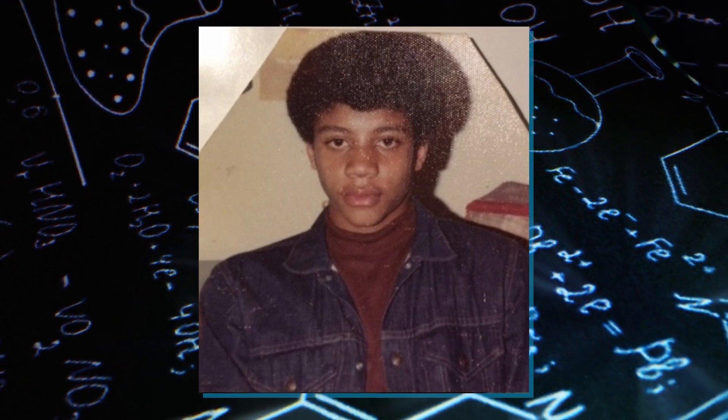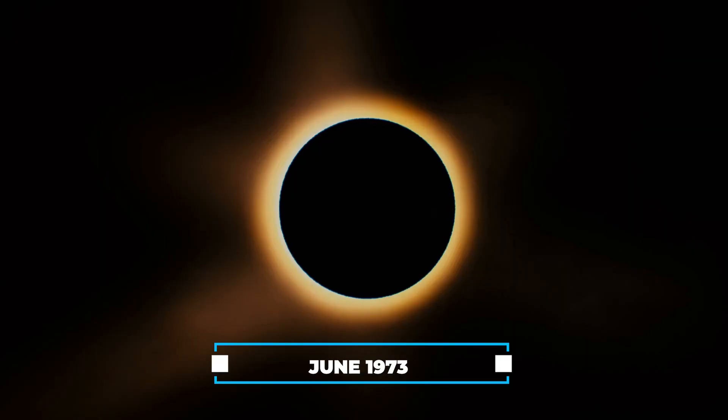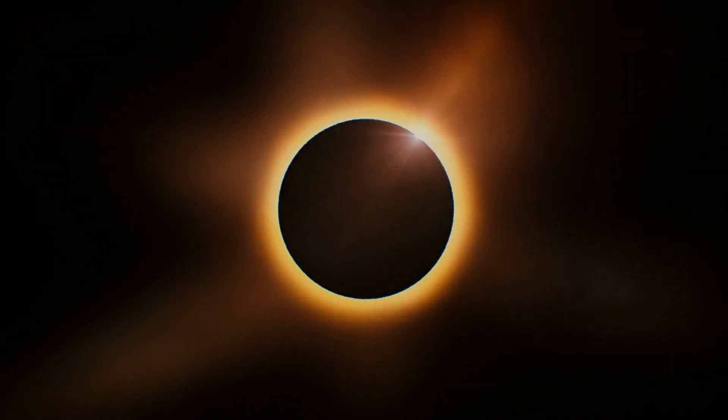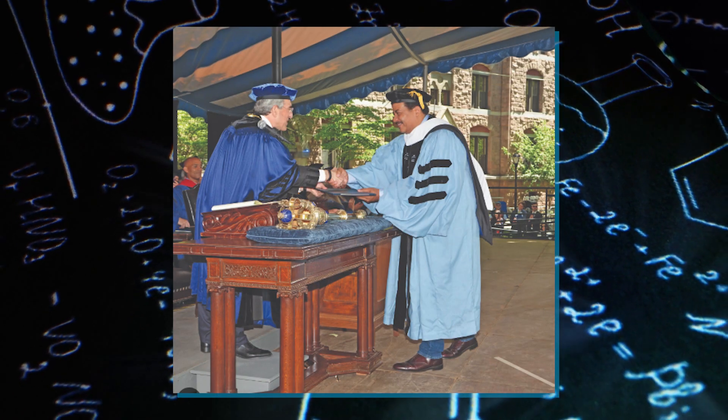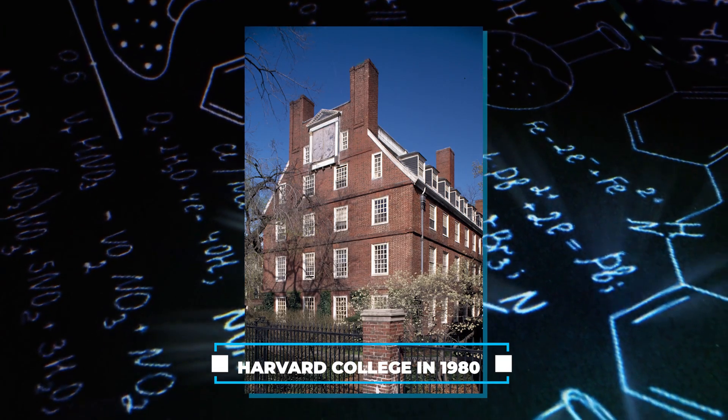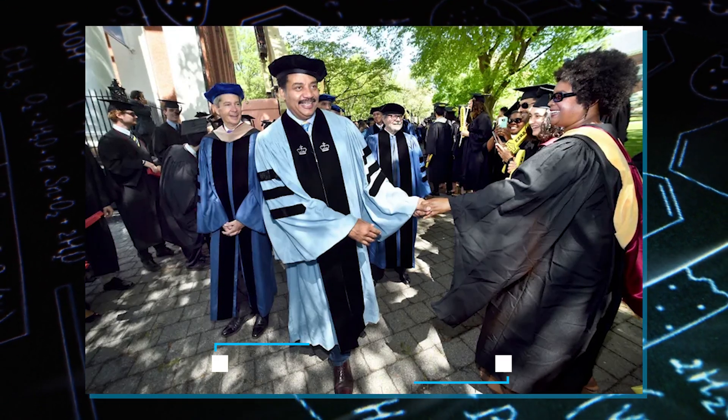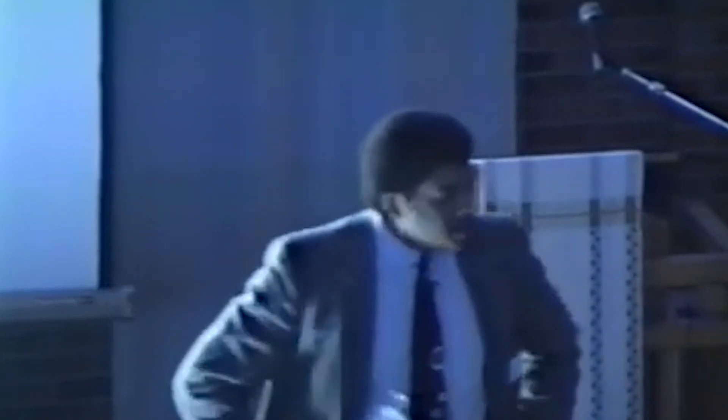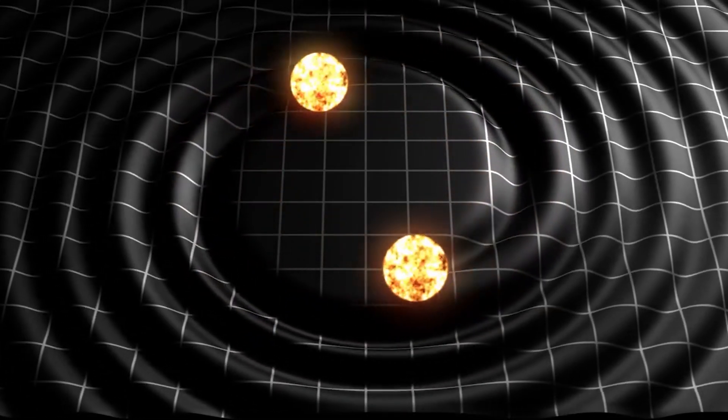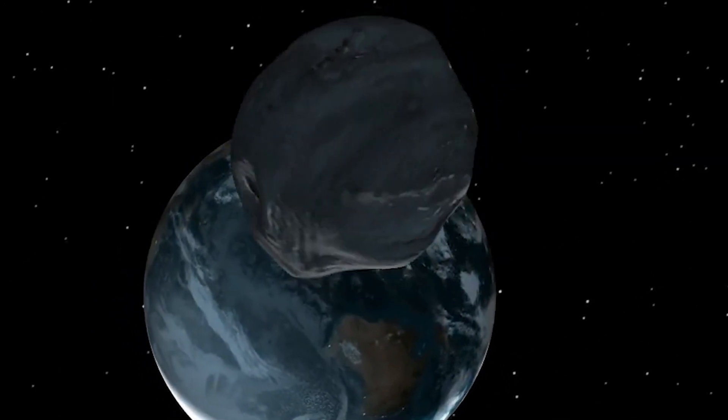He fondly recalls that his interest in the universe began during this transformative period of high school. At 14, Tyson received a scholarship from the Explorers Club of New York to witness the June 1973 total solar eclipse. His deep-rooted fascination with astronomy led him to earn a BA degree in physics at Harvard College in 1980 and pursue graduate studies at the University of Texas at Austin, where he obtained an MA degree in astronomy in 1983. These experiences laid the groundwork for Tyson's influential role in educating the general public about science and astronomy.